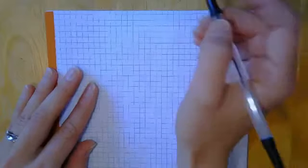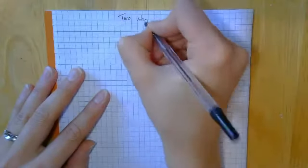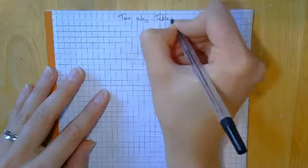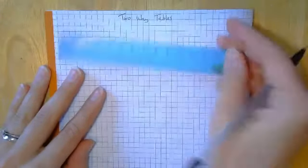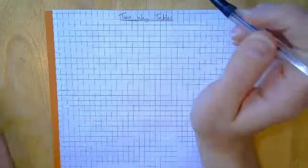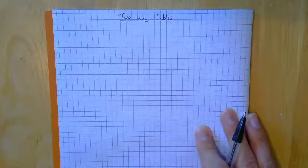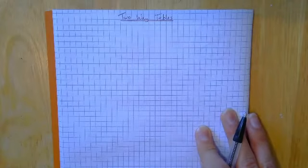Today we're looking at two-way tables, and again, you'll just need a ruler today. So we're looking at what we call two-way tables, which, like the sample space diagrams that we were looking at,